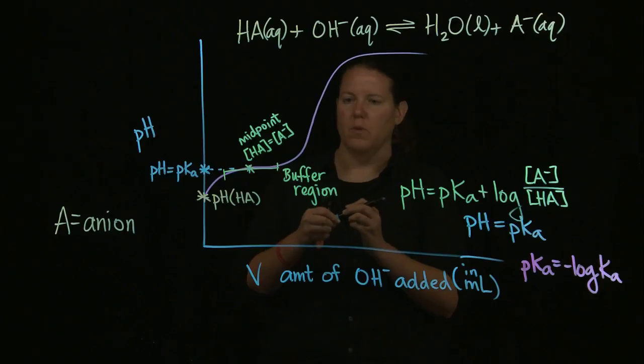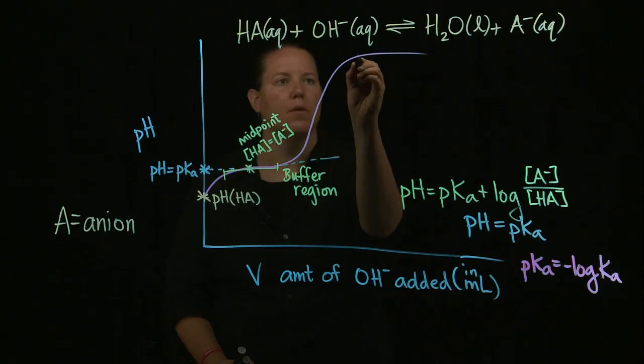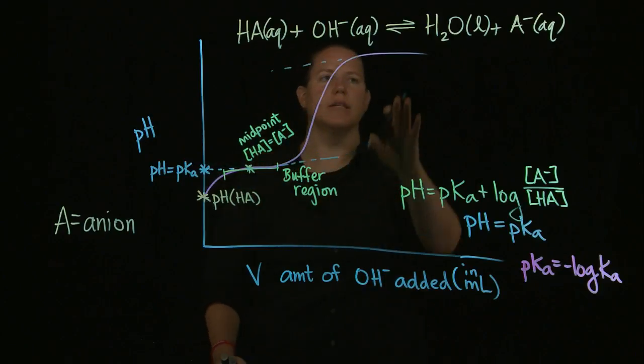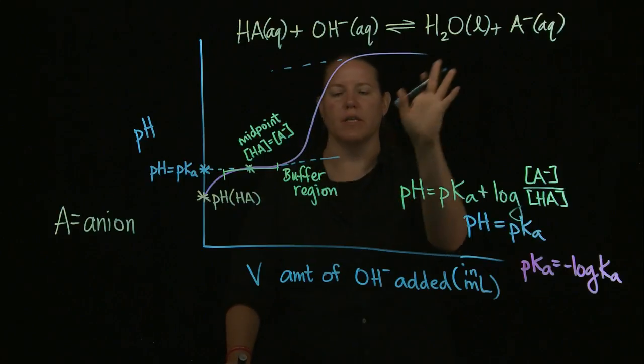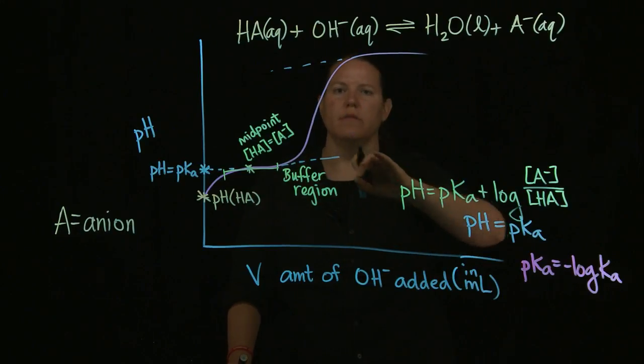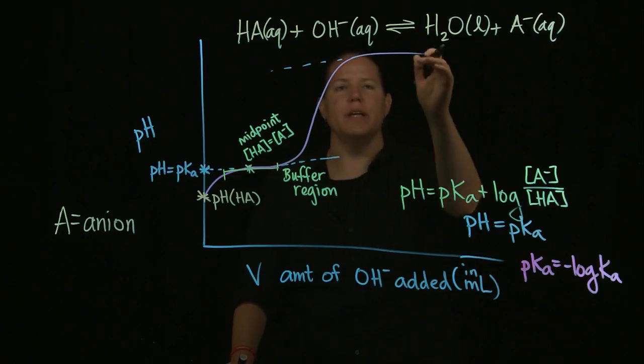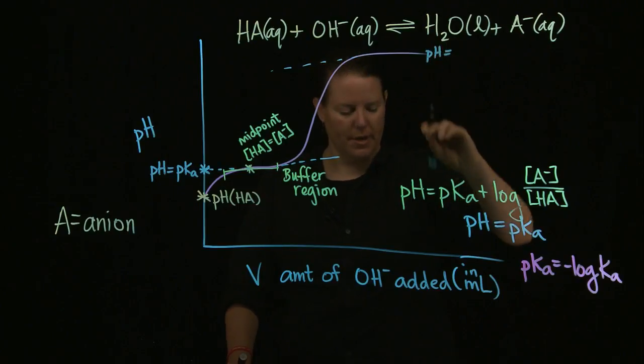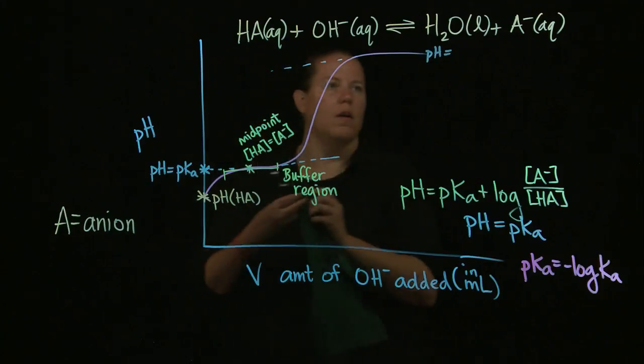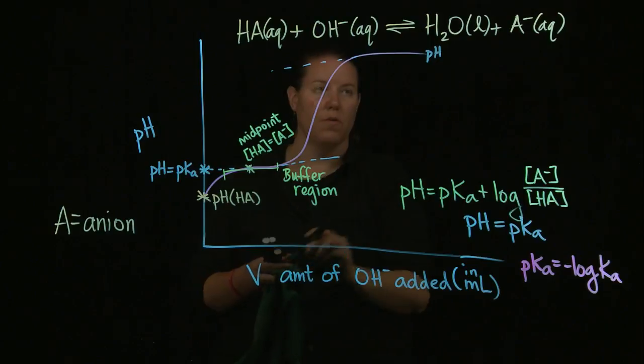Right now, we are just trying to get to the place where we can label all of these pieces. Let's say I extend this kind of flat region out. That's not a perfect extension, but you get the point. And I extend this flat region out for the buffer. What is this top region? That makes sense. That's where I've added so much OH that basically here I'm just measuring the pH of the OH that I've added. That's why it's flat. It's the same number over and over and over again.